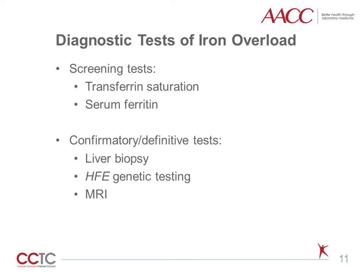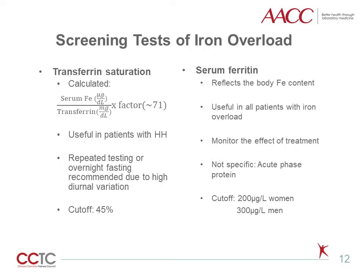Transferrin saturation and serum ferritin are two major screening tests for iron overload. After patients at high risk are identified with these tests, final diagnosis is made by definitive tests including liver biopsy, HFE genetic testing, and imaging techniques such as MRI for the quantification of hepatic and cardiac iron deposition. As screening tests of iron overload, transferrin saturation and ferritin are frequently ordered together, and both have pros and cons to quantify iron overload in patients. Transferrin saturation, for example, is not directly measured but calculated based on serum iron and transferrin concentrations.